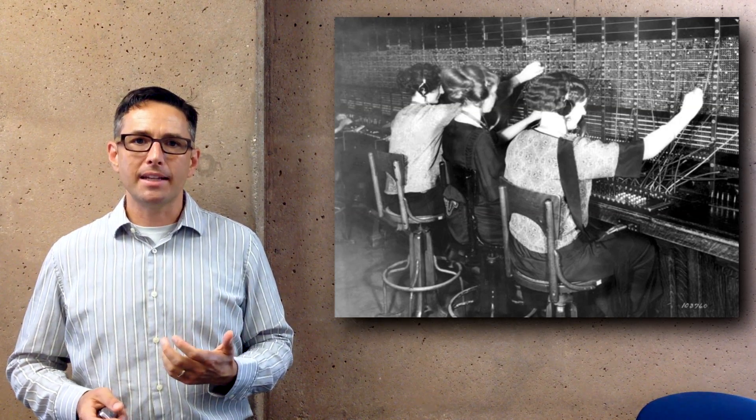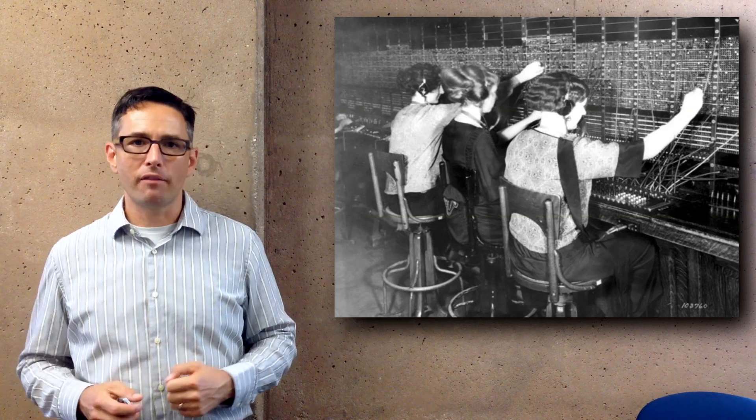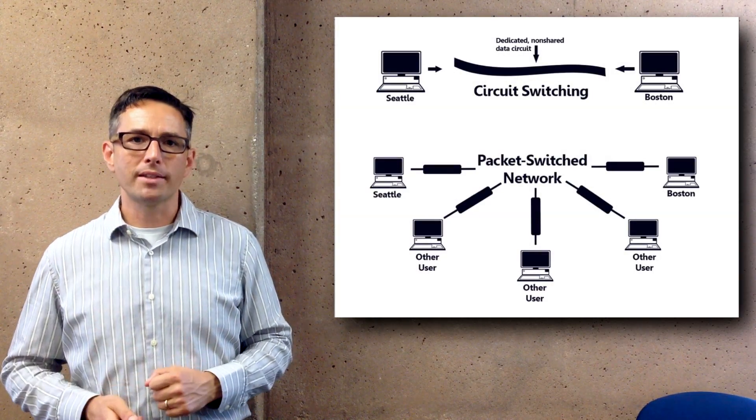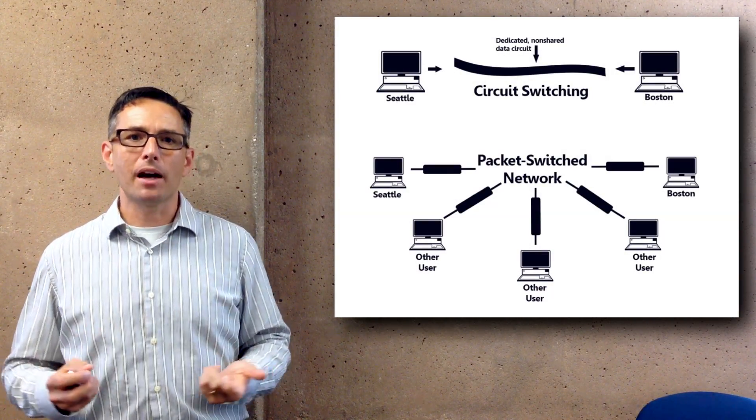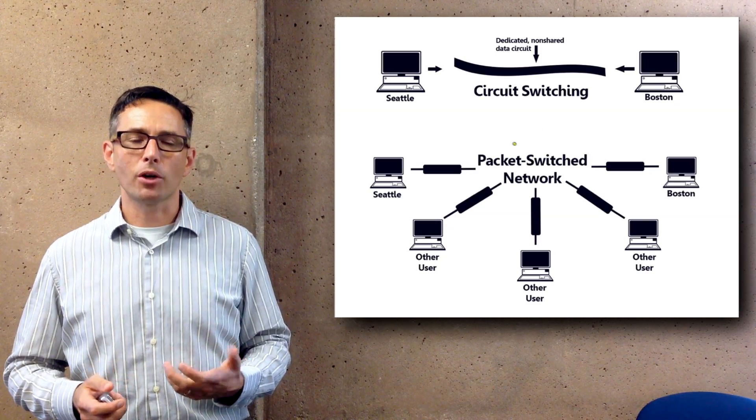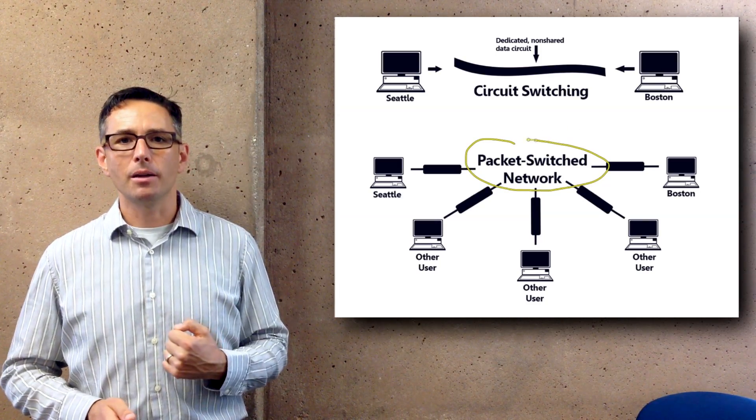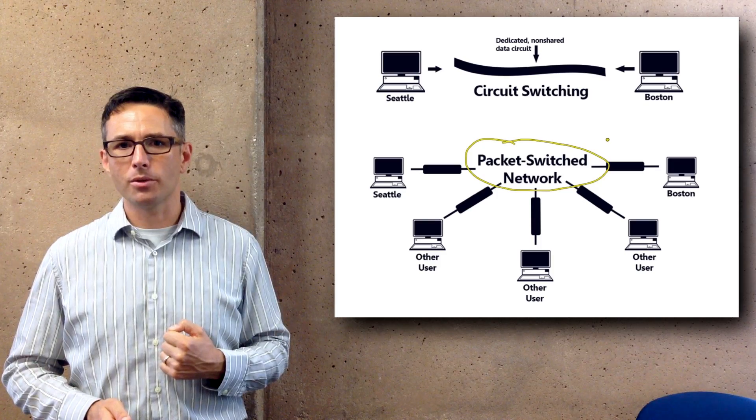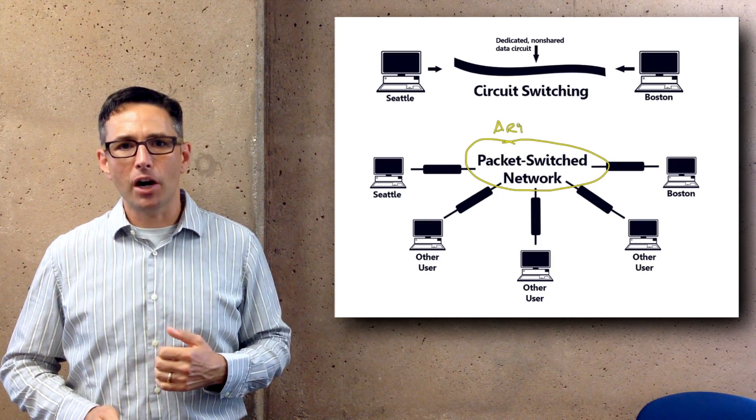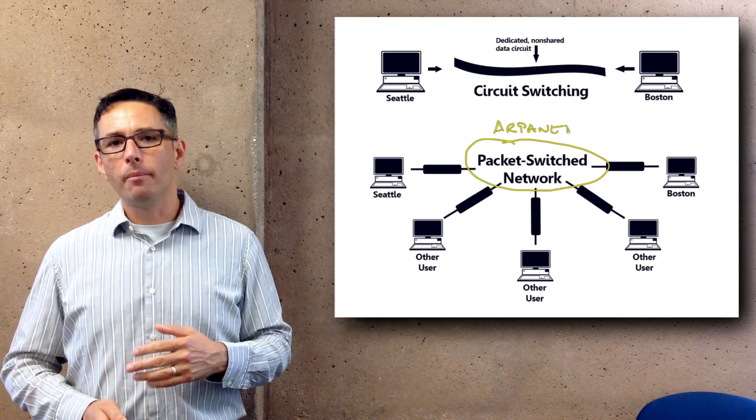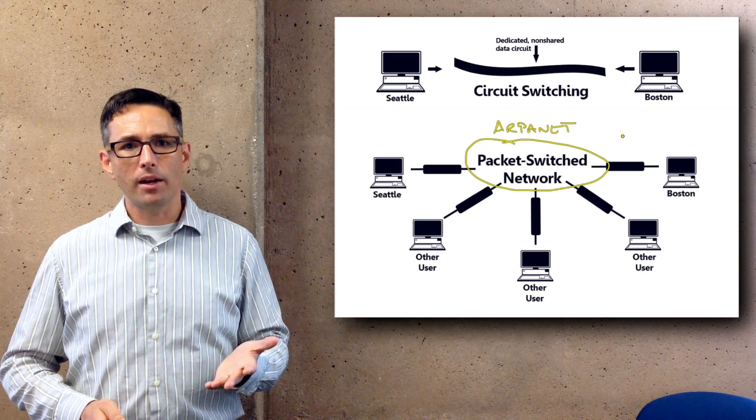What the internet did is it enabled many different conversations to travel over one single wire by breaking up the conversation into packets, rather than requiring one separate circuit to create an end-to-end connection between people. That was the key innovation of ARPANET and the basis of the internet we know today.